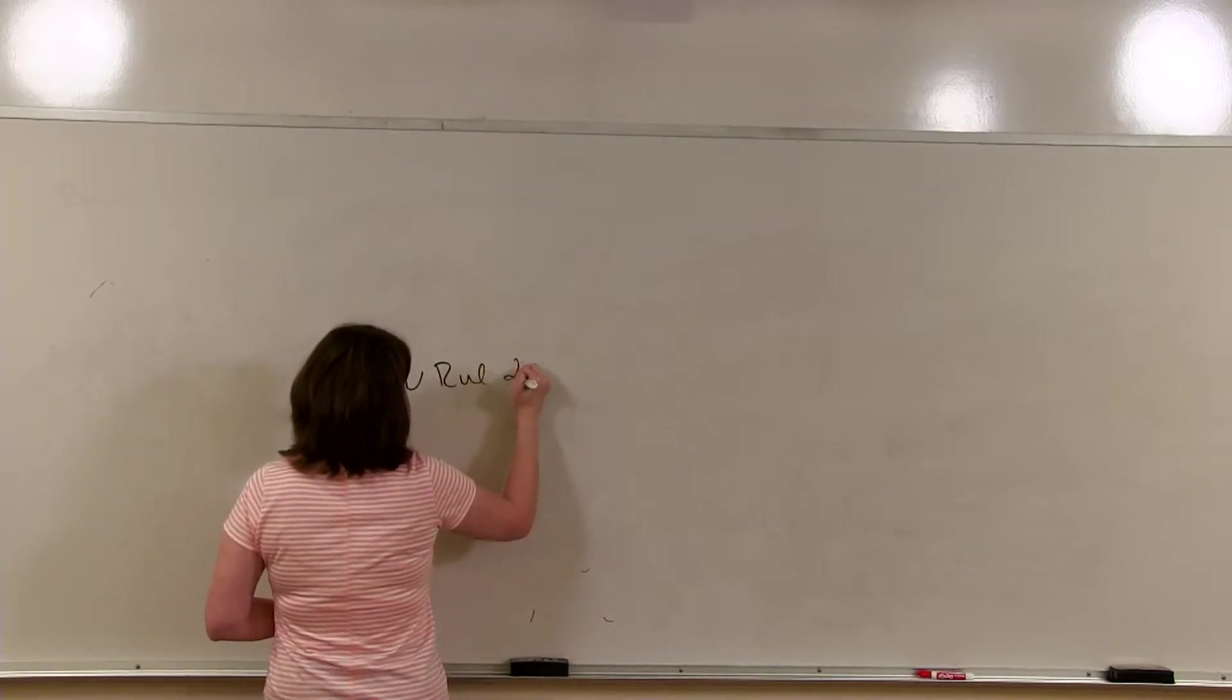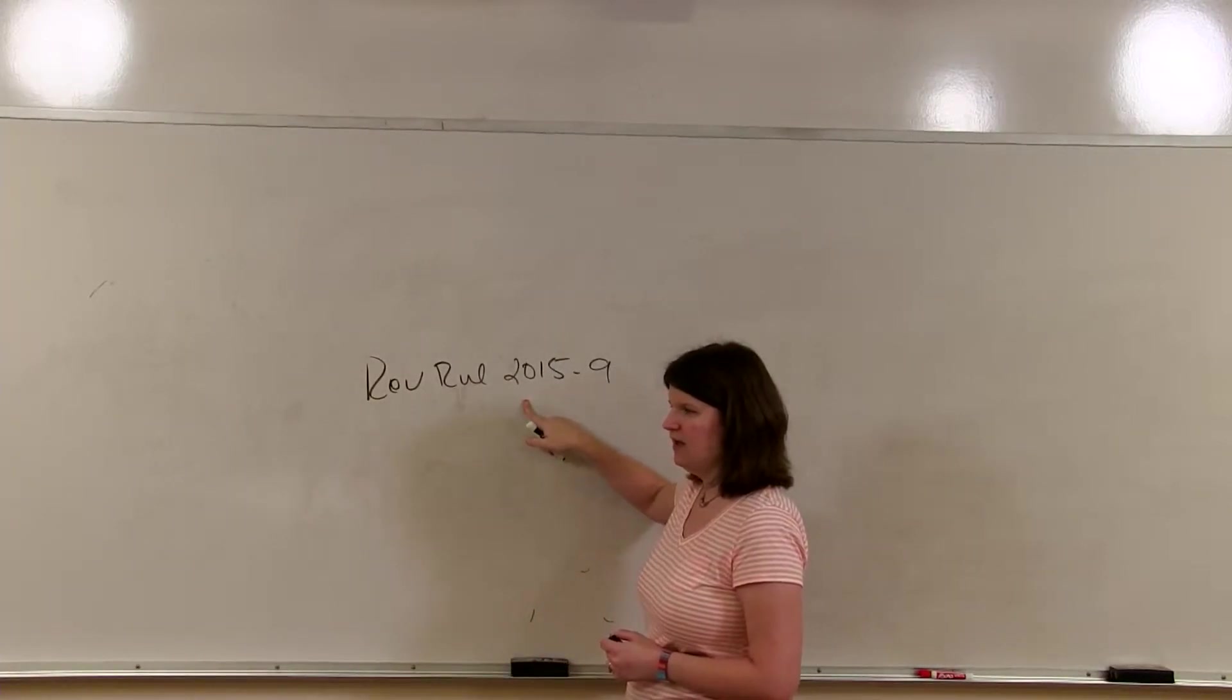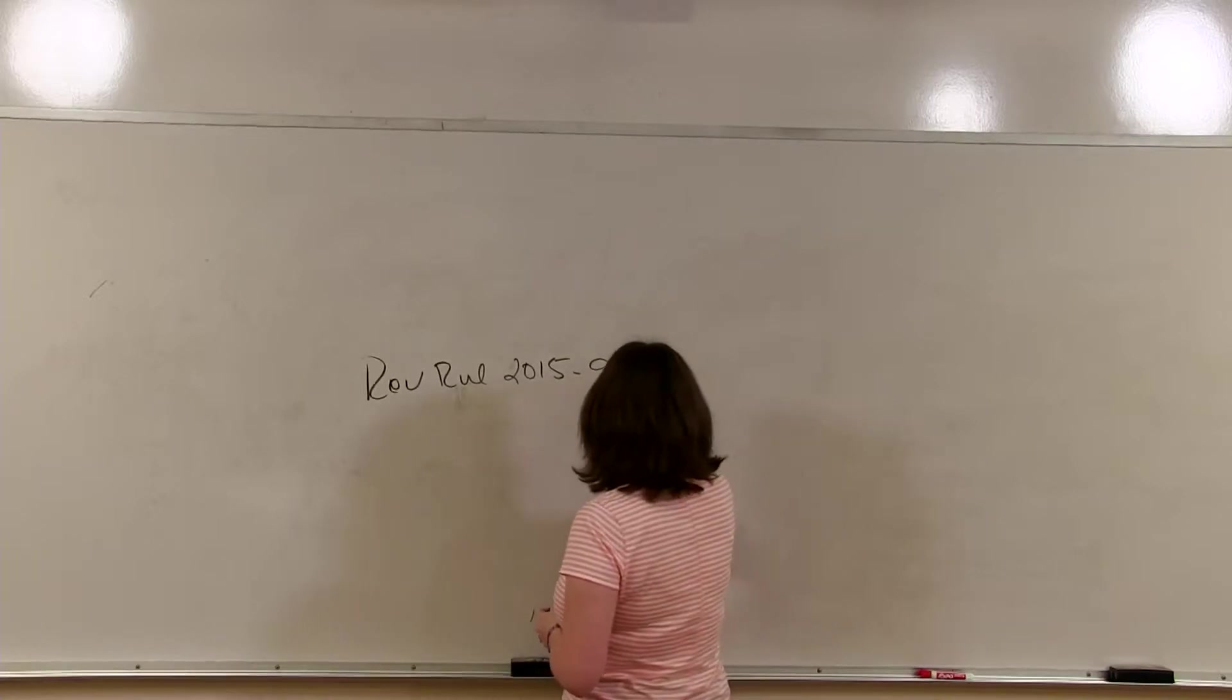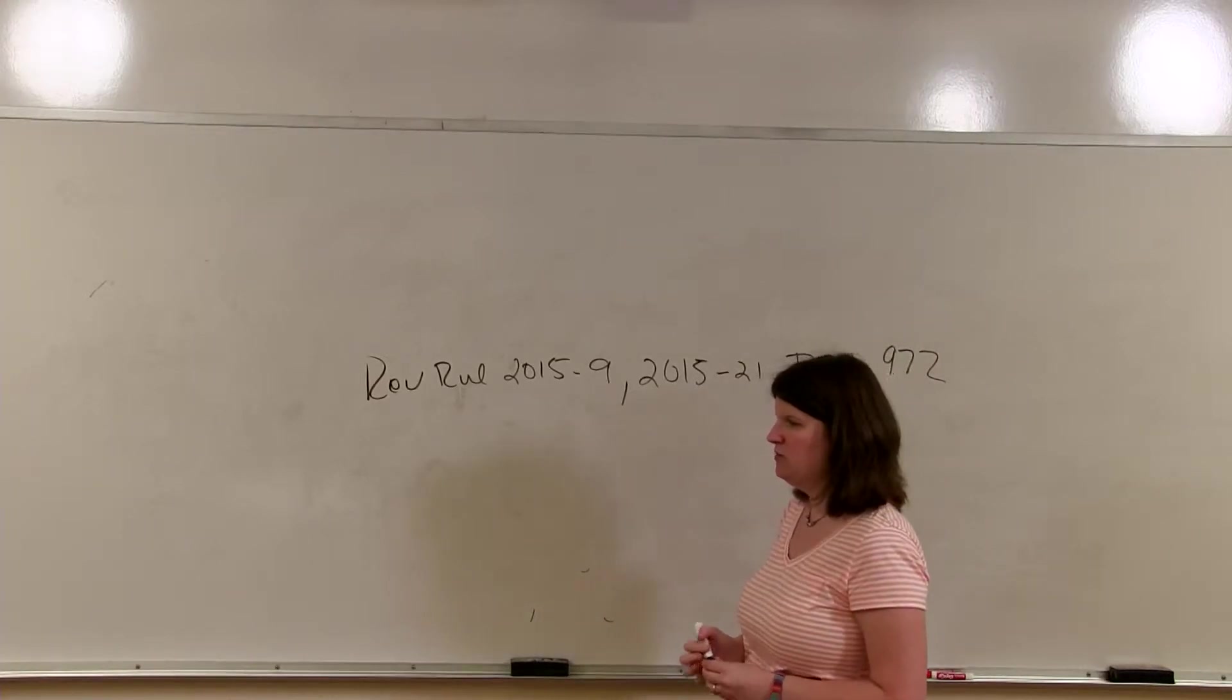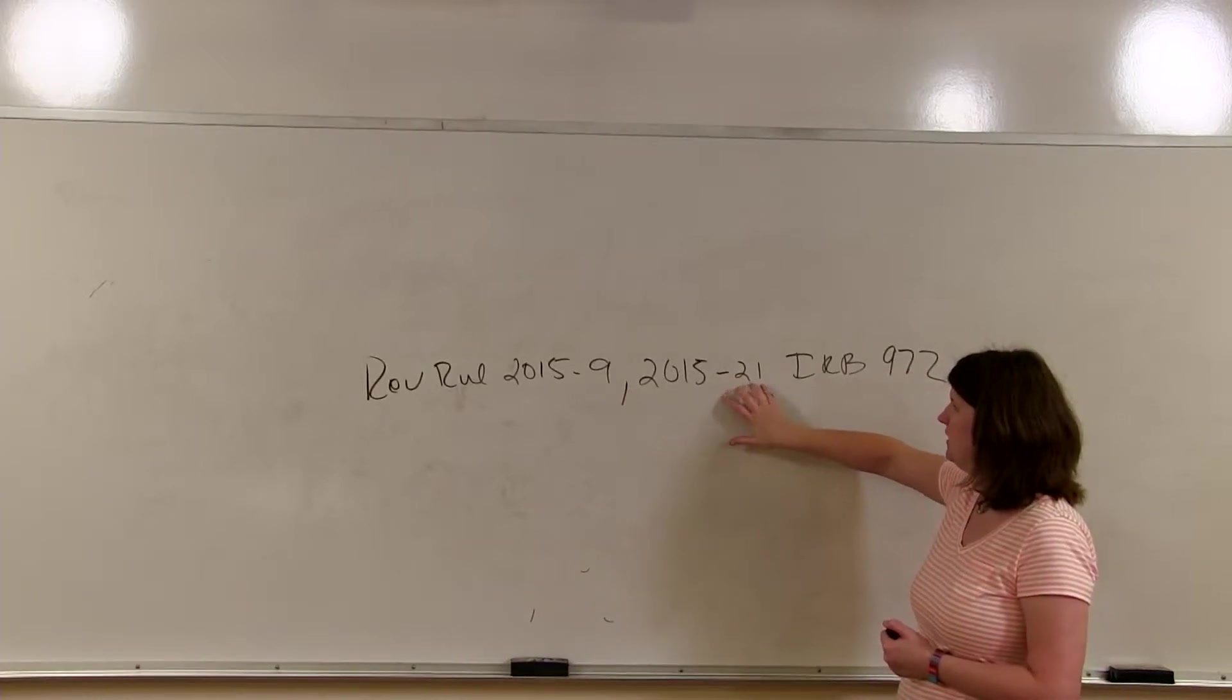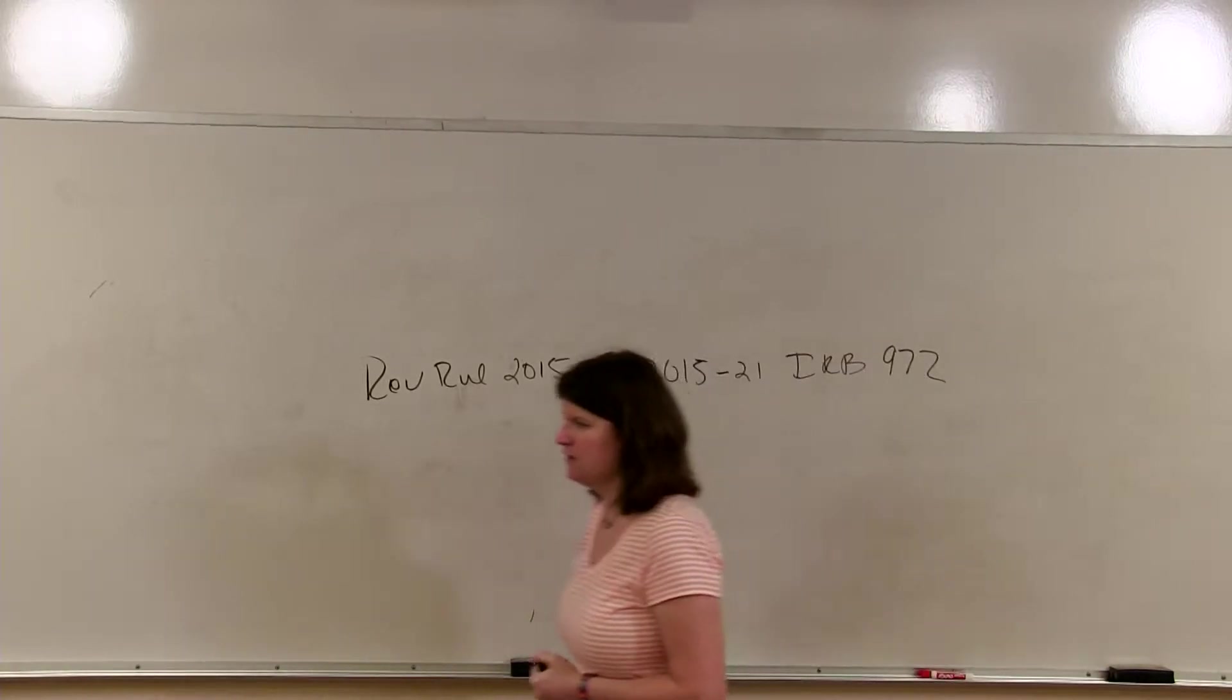Revenue rulings are published in the Internal Revenue Bulletin, okay? Here's an example on slide 14 of the citation. So here we have Rev Rule 2015-9. That means it's the ninth revenue ruling in 2015. And we have 2015-21 Internal Revenue Bulletin 972. So this is the full citation, which means it appears on page 972 of the 21st issue of the Internal Revenue Bulletin in 2015. So that is how the citation works for revenue rulings.